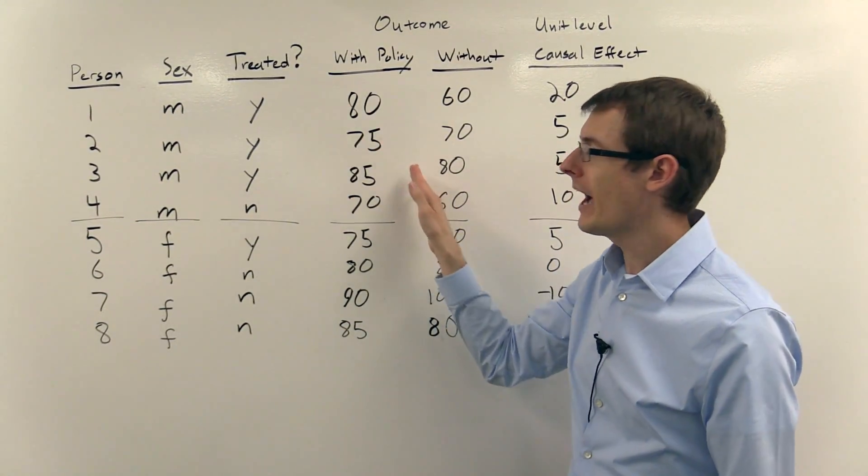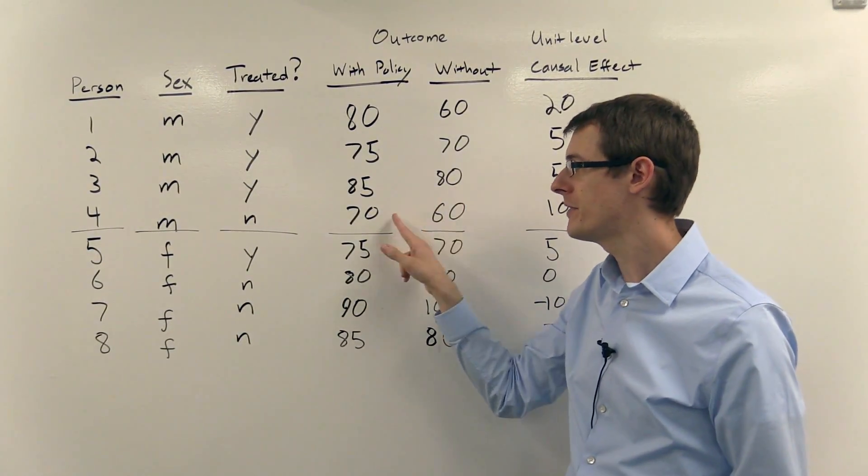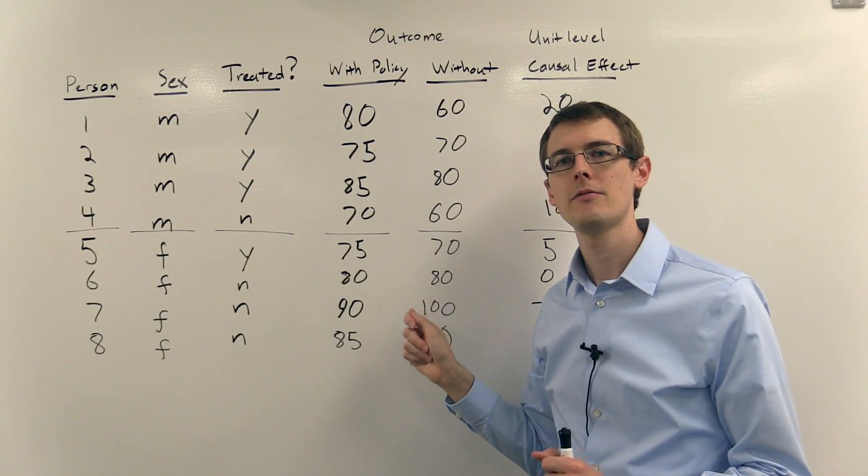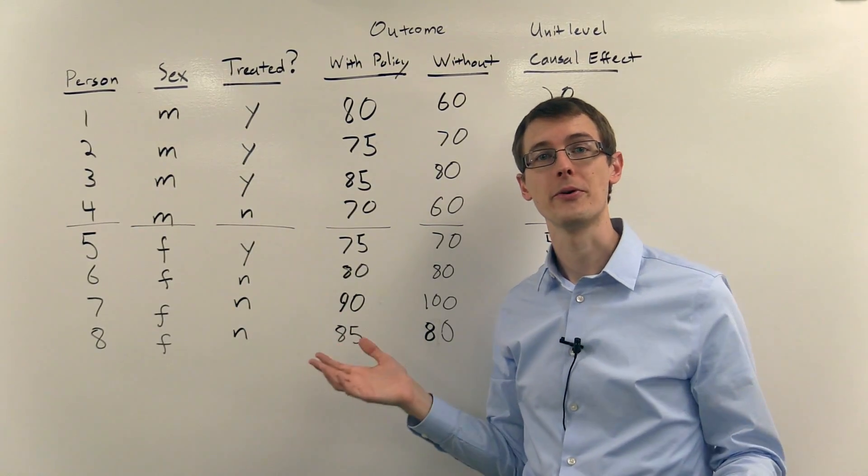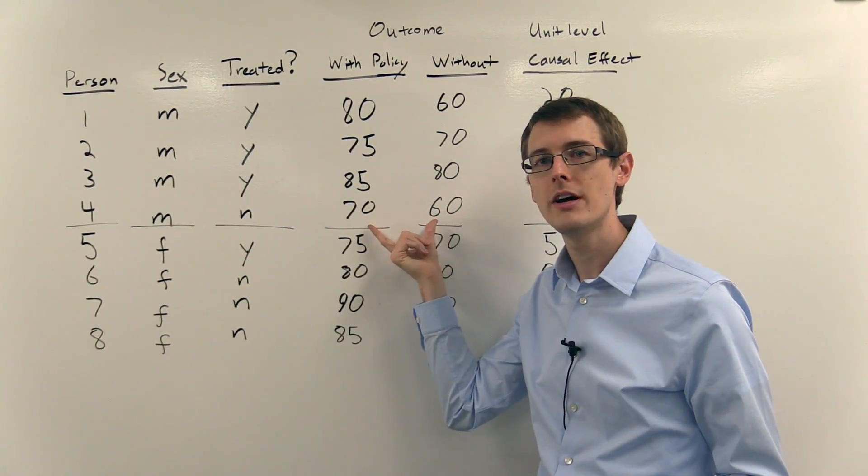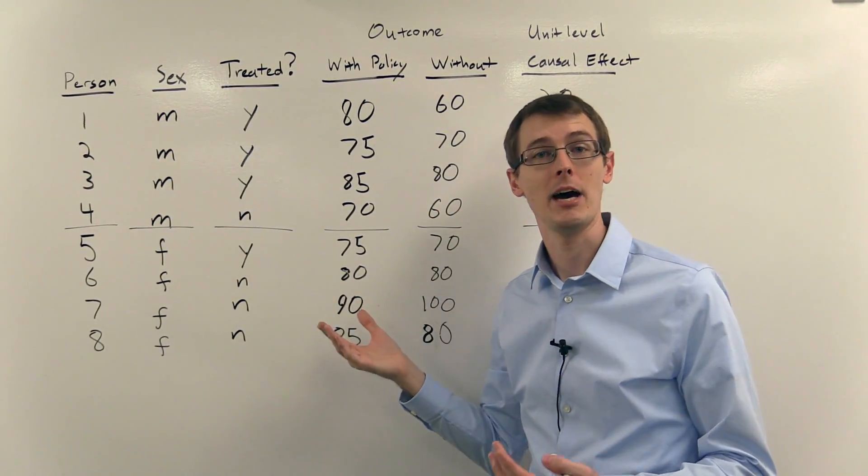Now we're never going to see both of these numbers simultaneously for the same person in a dataset. That's the fundamental problem of causal inference - you can't observe the counterfactual outcome, what didn't happen.